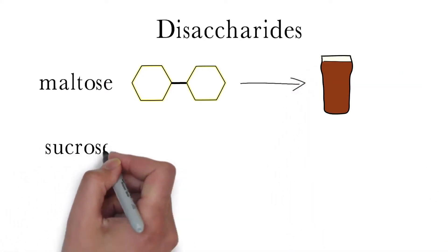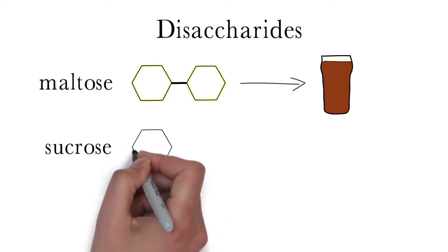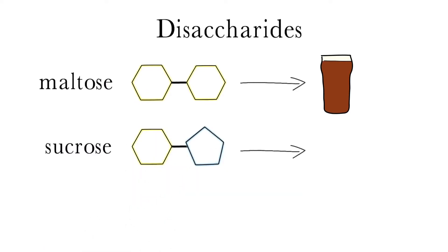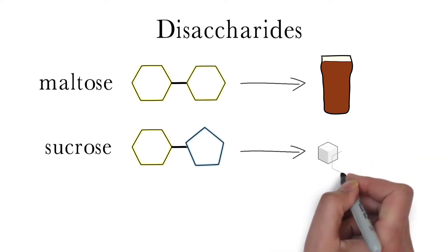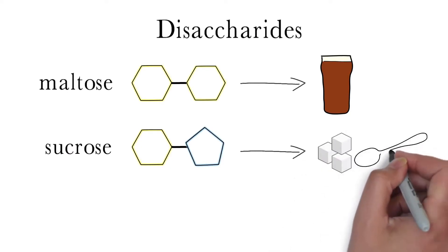The second is sucrose, which is formed by linking a molecule of glucose and fructose. Sucrose, commonly known as table sugar, is the main ingredient in all store-bought granulated sugar.